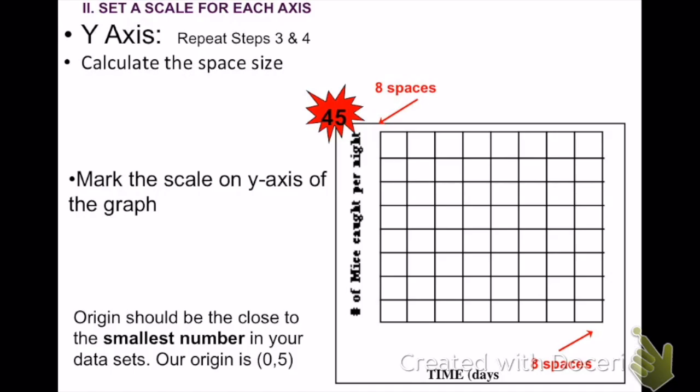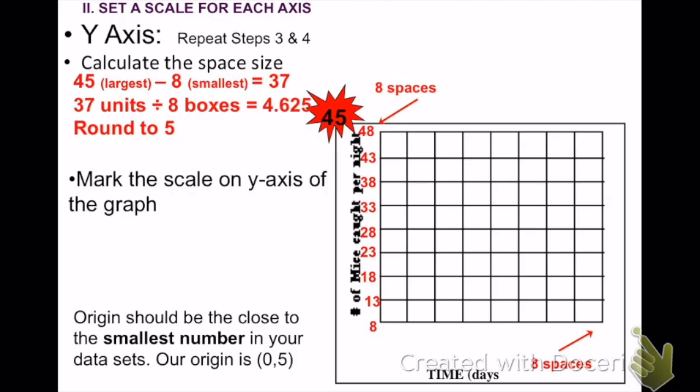Now you repeat for the y-axis. Repeat steps 3 and 4. Calculate the space size. There are 8 spaces. Now you need to subtract the smallest data set from the largest data set, which is 37. Divide by the number of boxes, which is 8 boxes. So that gets you 4.625. You can't go up by that. That would be way too complicated. So you need to round up, which would be 5. You will start your origin with your smallest data set. Your smallest data point is 8. So from there, you go 8, 13, 18, 23, 28, 33, 38, 43, 48. And remember, the highest number at the top of your y-axis should be either the exact same as your largest data set or a little bit higher, which this is fine.